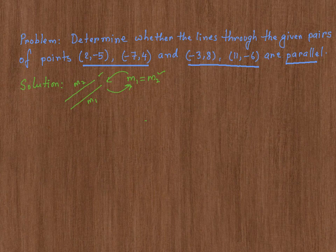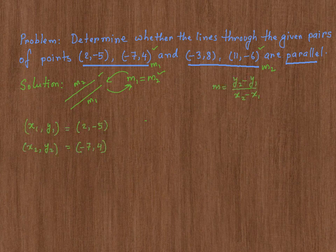So in order to solve this problem, we need to find the slopes of these lines. We are going to find the slope of this line and the slope of this line and compare them. I'm going to call the slope of this line M1 and the slope of this line M2. If M1 is equal to M2, then the lines are going to be parallel to each other. We are going to use the slope formula: Y2 minus Y1 divided by X2 minus X1.